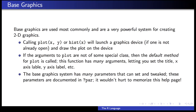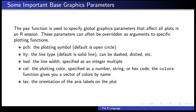The base graphics system has many other parameters which are not necessarily arguments to the default plotting function — all of these can be set, tweaked, and modified. You're going to have to know at least some of them to know how to customize your plots. Most of the parameters are documented in the help page for the par function, and it wouldn't hurt to memorize that help page if you're going to be doing a lot of plotting. The par function is used to specify the global graphics parameters — anything you set in the par function will affect all plots you make in a single R session.